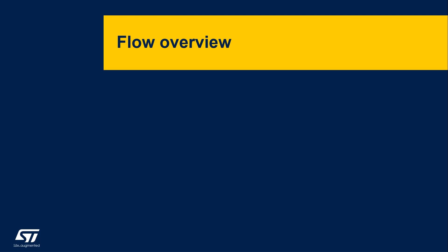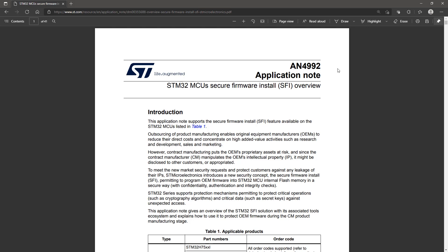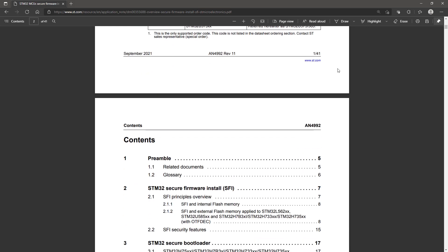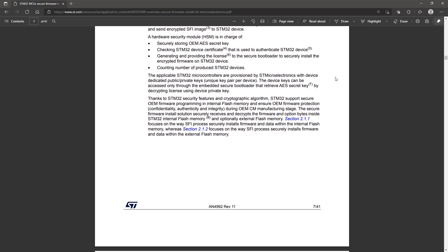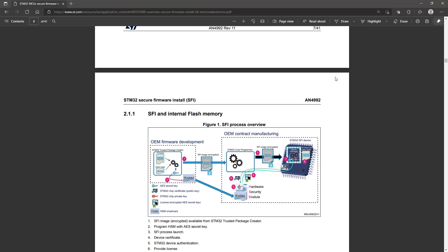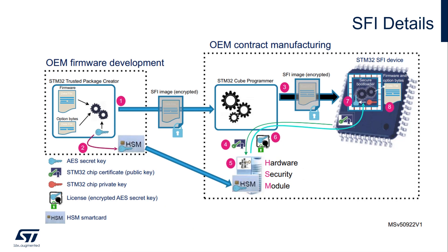Now that we have introduced the tools enabling SFI, we can get a closer look at the whole process. This overview is covered in application note AN4992, which you can refer to for additional details. The graph shows the steps the SFI process goes through to secure the manufacturing. The first phase happens at the OEM, who is responsible for firmware development, for creating and managing the secret keys used to protect the transport of the firmware image, and for the creation of the SFI package.